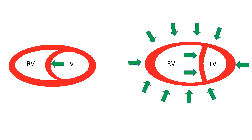The right ventricle is more compliant than the left ventricle and adapts better to volume loading than to pressure loading. The ventricles demonstrate ventricular interdependence as shown in the figure. Normally, the pressure in the left ventricular cavity causes the septum to bulge towards the right. In pulmonary hypertension, the increased right-sided pressures flatten the septum in systole, and eventually the septum can bulge into the left, causing left ventricular systolic and diastolic dysfunction in severe pulmonary hypertension.